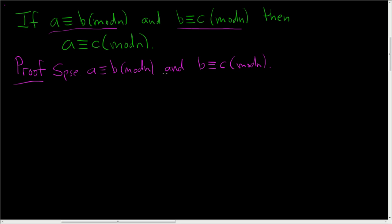This means a couple things. This means that A minus B is a multiple of N, that N divides A minus B. Let's just stick with A minus B is a multiple of N. So then A minus B equals K times N.